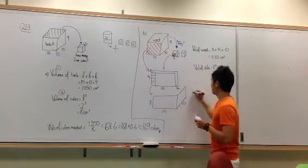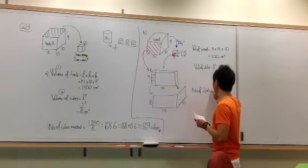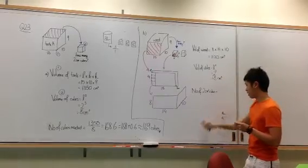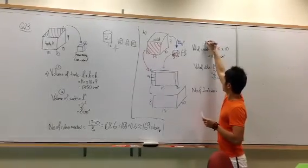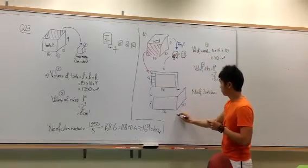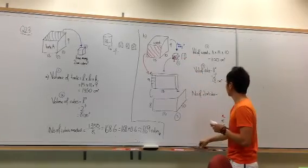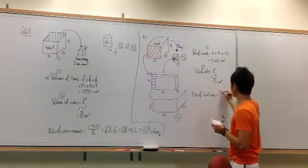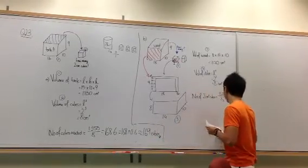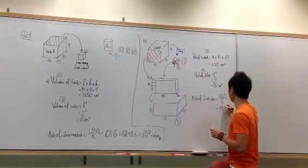And the number of 2 cm cubes that you can cut will be, again, this volume divided by this volume. Which will be 1,120 divided by 8. This should give you 140 cubes. Exactly.